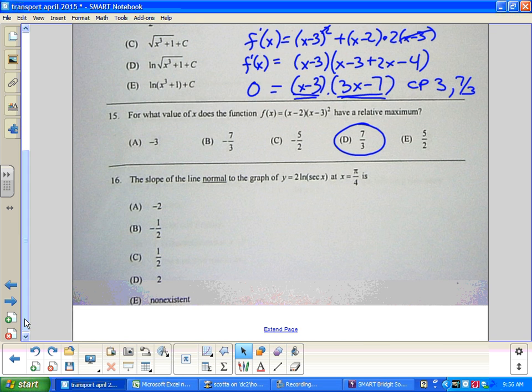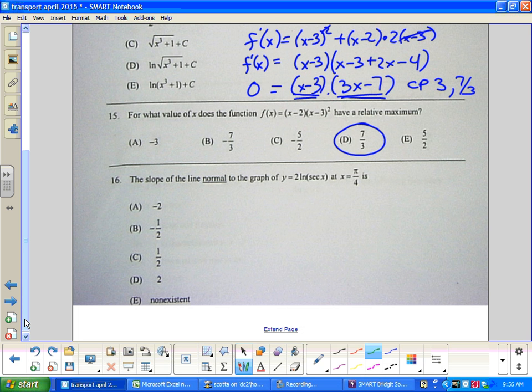Problem 16. The slope of the line normal to the graph y equals 2ln(sec x) at x equals π/4. Okay. Normal means perpendicular. That's usually one of the problems students have at this point. And that means I have to know the tangent line to find the perpendicular line to that curve at the point of π/4. So I'm going to take the derivative, find the value at π/4, and then do the opposite reciprocal. So a lot of work here.